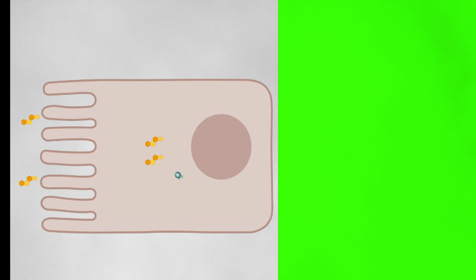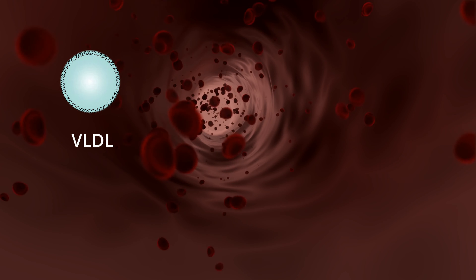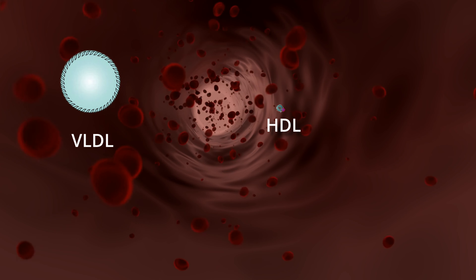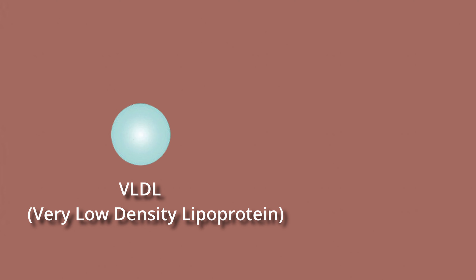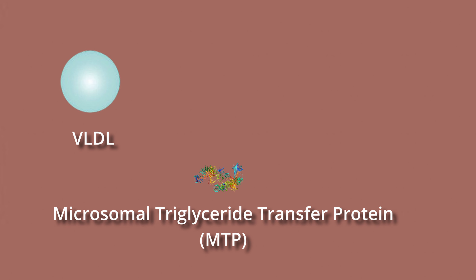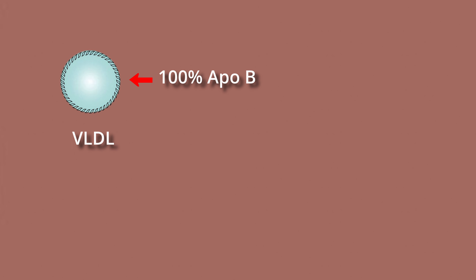Free cholesterol is either excreted back into the intestinal lumen or into the bloodstream as HDL. The liver secretes VLDL and nascent HDL. The liver packs triglycerides, cholesterol, and other lipids into VLDL with the help of MTP with the protein ApoB100, containing 100% protein coated by the ApoB gene.